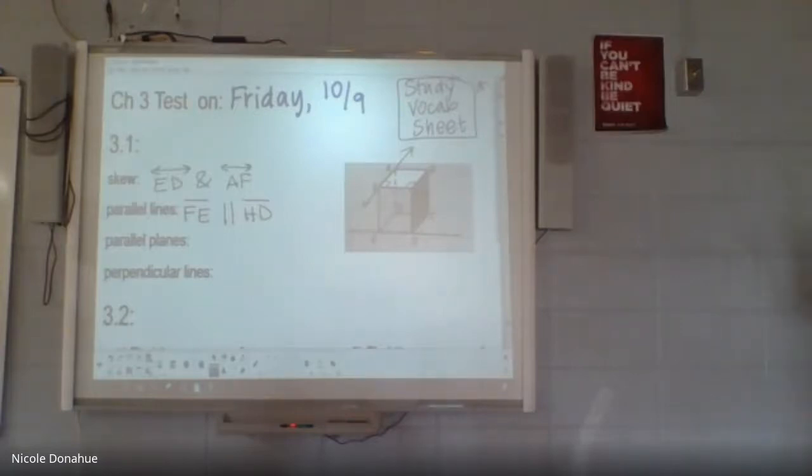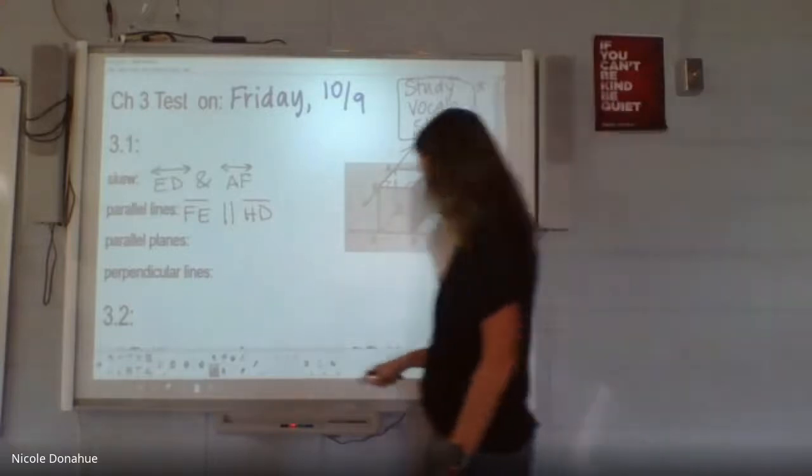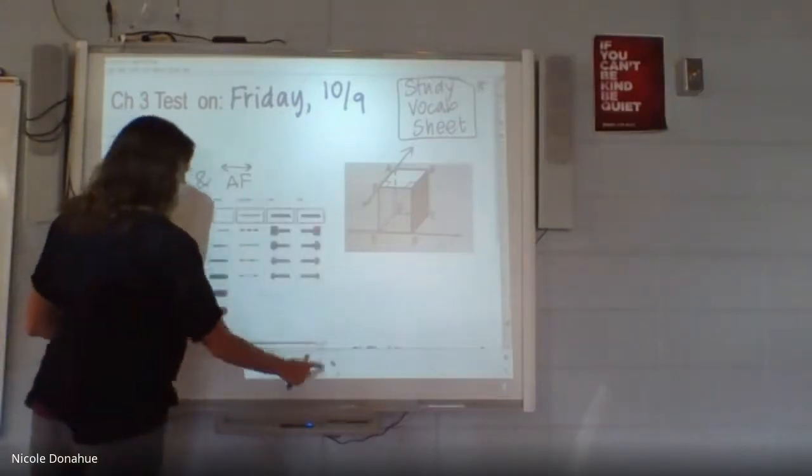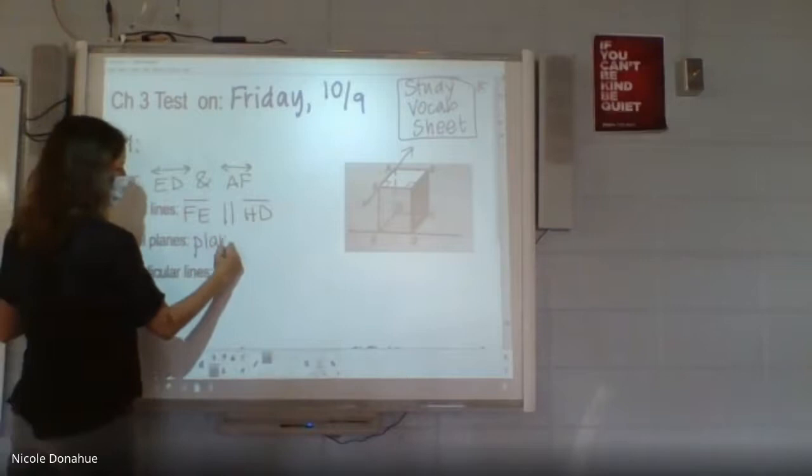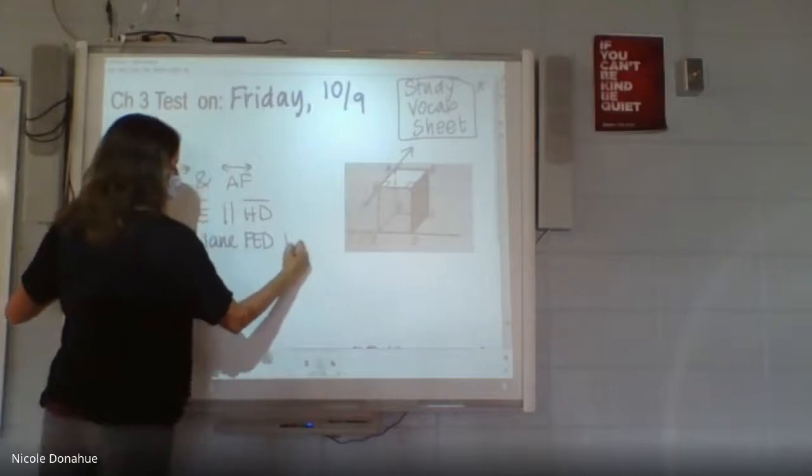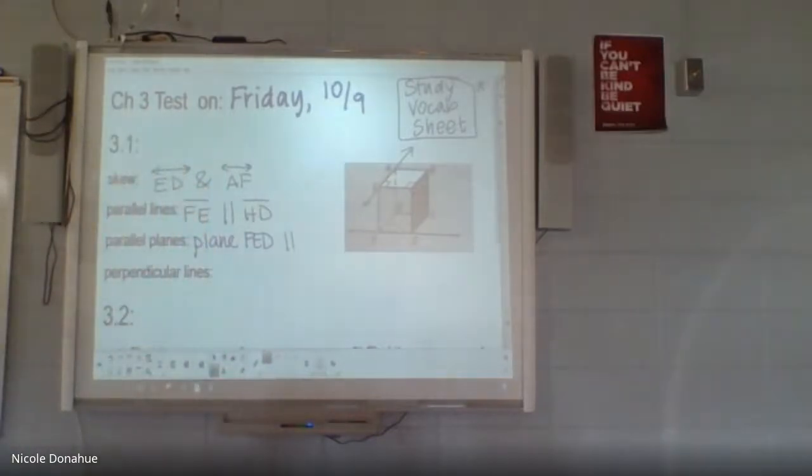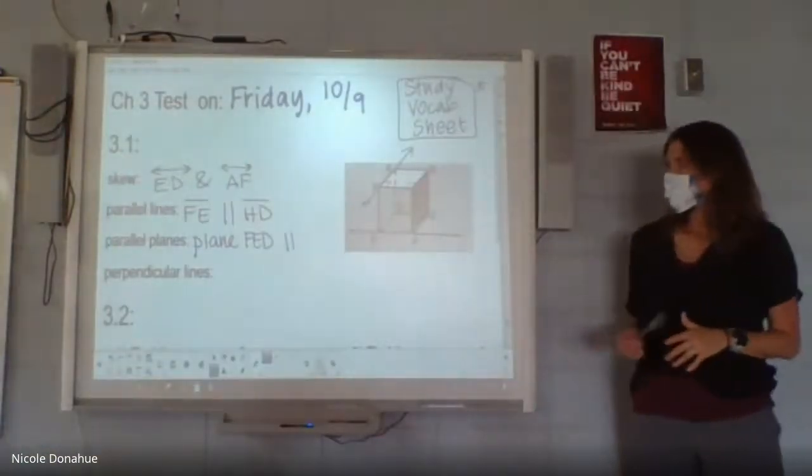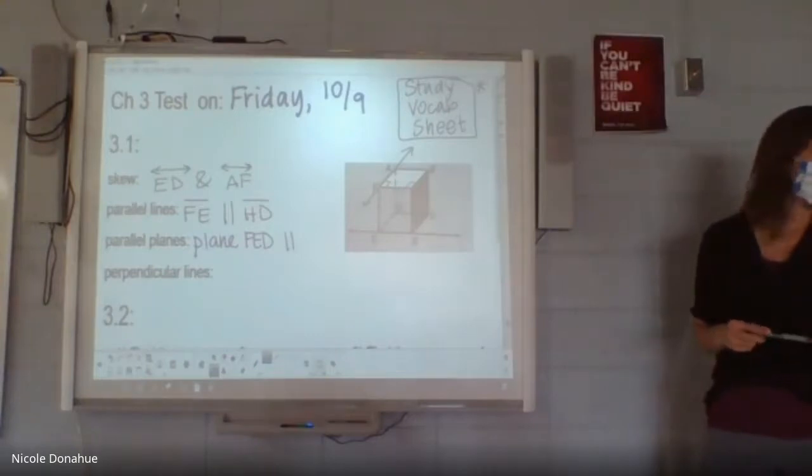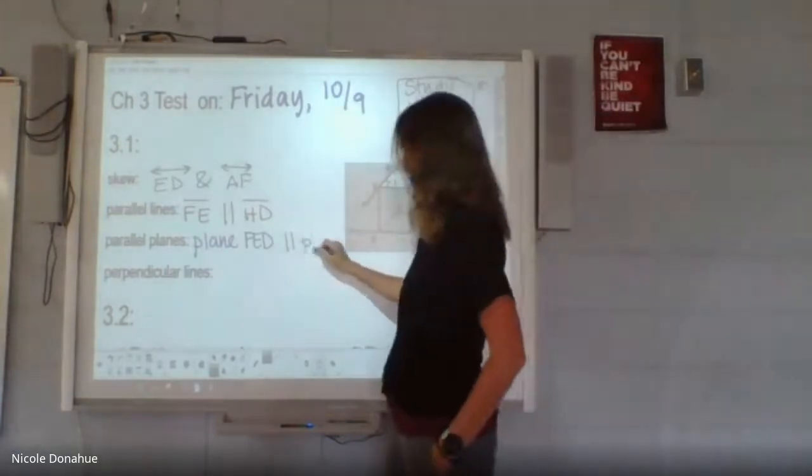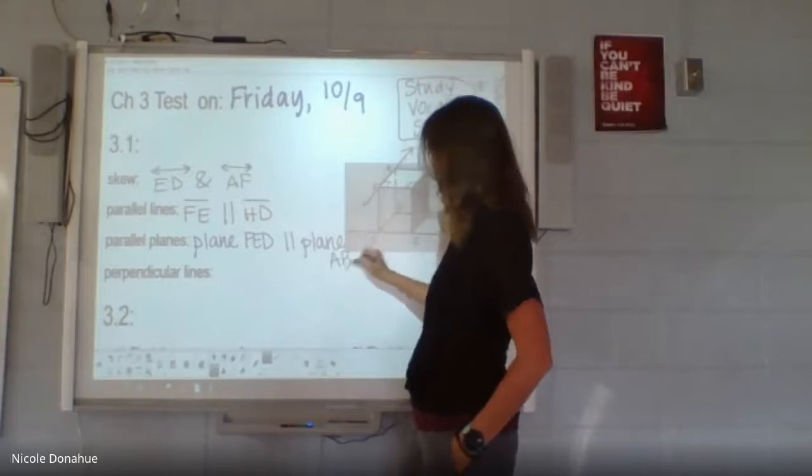Now the planes don't have the fancy letter with it here. So we need three letters for planes. So I'm going to say plane AED, so that's the front one, is parallel to which plane? Yeah, go ahead, Luke. ABC, that's fine. So like the back one, you can call it. So the front and the back.